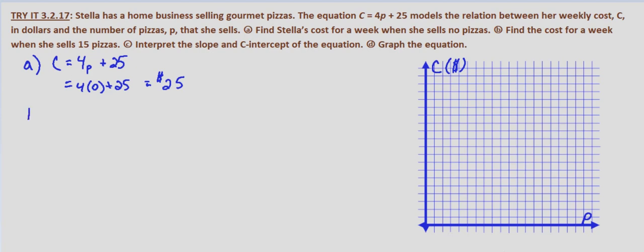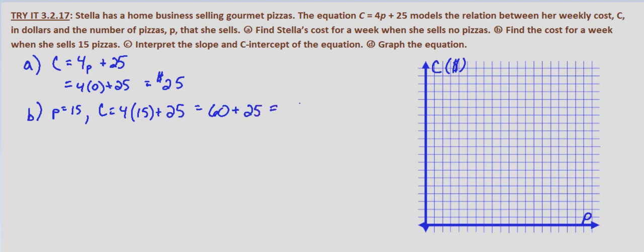With part B we're asked to find the cost for a week when she sells 15 pizzas, so this is P equals 15. When P equals 15 we have C equals 4 times 15 plus 25, which equals 60 plus 25, which equals $85.